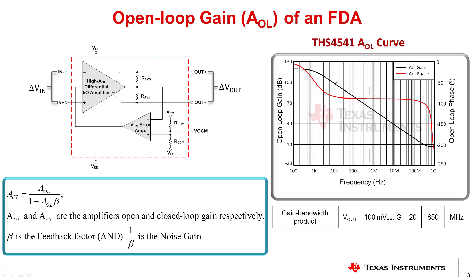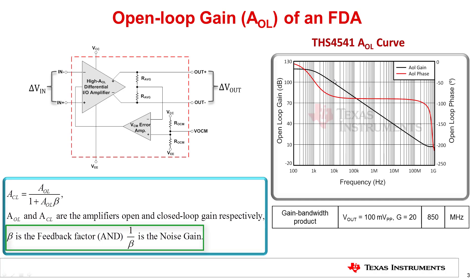The control theory equations from the previous slide are repeated here. The forward gain of the system A has been replaced by the feed forward amplifier's open loop gain. The amplifier's feedback factor, beta, will be discussed on the subsequent slide. Similar to single-ended op amps, the inverse of the amplifier's feedback factor, or 1 over beta, is also called the noise gain.